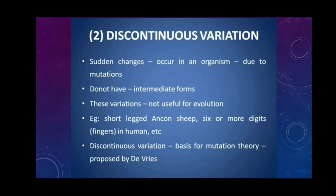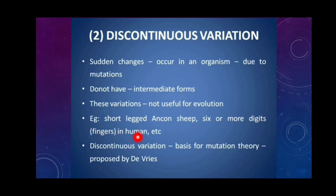Discontinuous variation refers to sudden changes which occur in an organism due to mutation. They do not have any intermediate forms. These large variations are not useful for evolution. For example, short limb-angle shape, six or more digits — that is, fingers — in humans, etc.